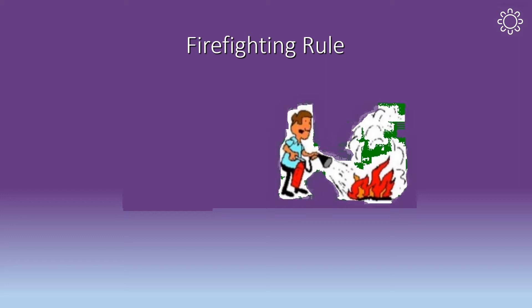The final rule to remember, regardless of what equipment you choose to use to fight a fire, is to always position yourself with an exit or means of escape at your back before you attempt to put out a fire. You do not want to become trapped if something unexpected happens and you need to get out quickly.